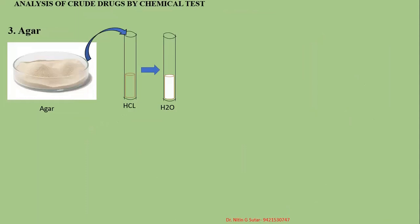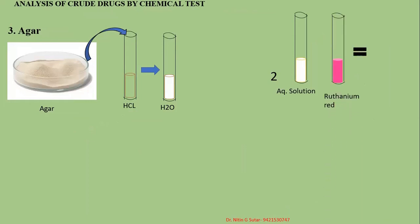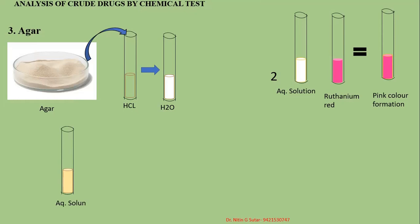The next drug is agar. The synonyms of this drug are agar-agar, Japanese agar, and Japanese isinglass. When the aqueous solution of agar is prepared, add hydrochloric acid — white turbidity is formed. For the second test, add ruthenium red to the aqueous solution — a pink coloration is formed. In the case of acacia the test is negative, but in the case of tragacanth as well as agar, the result is positive with ruthenium red.